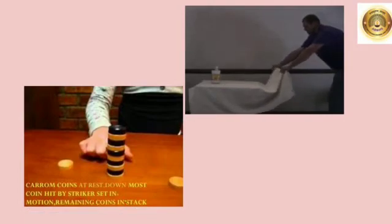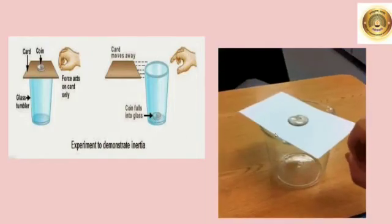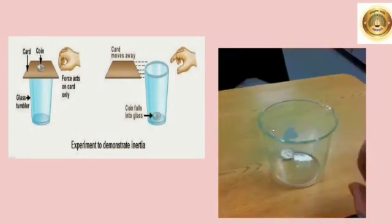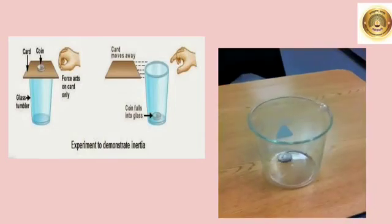The glass which is on the table remains at rest. Now, this is another experiment to demonstrate inertia. Here you have a glass tumbler with a card and a coin on top of the card. We are going to flick the card — that is, a force is going to act on the card only. When you flick the card, the card moves away because of the force acting on it. But the coin which is at rest on the card does not move; it falls into the glass. The coin remains in place because the force is acting only on the card.